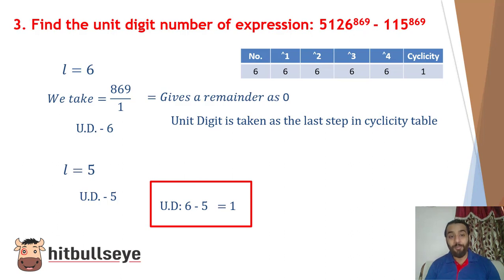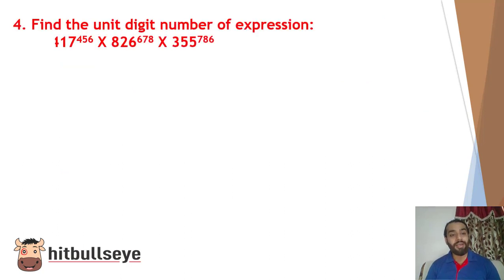Now, wasn't this very helpful? When you know that you see 0, 1, 5, and 6 as a unit digit number, be it any expression with any power, your answer will always be the same. Now, coming to the next question: find the unit digit number of the expression 417 raised to the power 456 multiplied by 826 raised to the power 678 multiplied by 355 raised to the power 786. Your options are 0, 1, 7, and none of these. Now I want you all to solve this expression and comment down below your answers in the chat box. If you like this video, do subscribe to our channel and do like this video. Thank you.